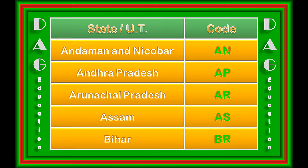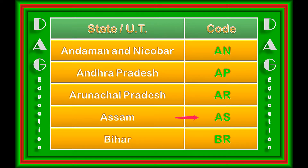Andaman and Nicobar: AN. Andhra Pradesh: AP. Arunachal Pradesh: AR. Assam: AS. Bihar: BR.